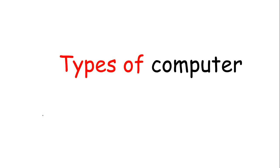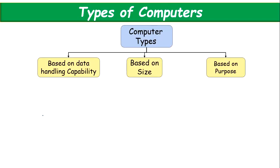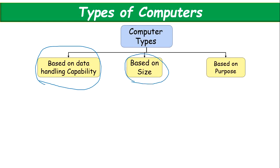Hello everyone. In this tutorial we will learn about types of computers, or you can say classification of computers. If you have a question about classification or types of computers, the answer will be the same. Types of computers are divided into three categories: first, based on handling capability; second, based on size, speed, and other parameters; and third, based on purpose.